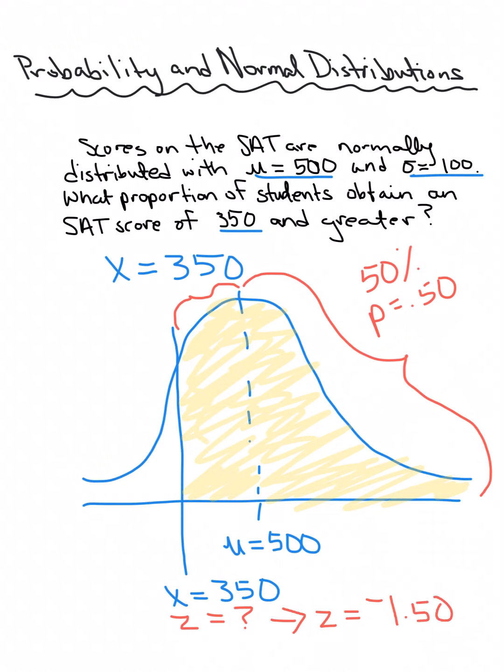So what we need to do is find the proportion, which is a probability. Right here is 0.4332, P equals. So what we need to do is add that to 0.50: 0.4332. And then once we add those together...